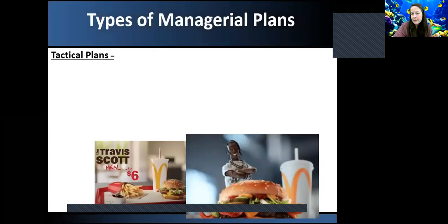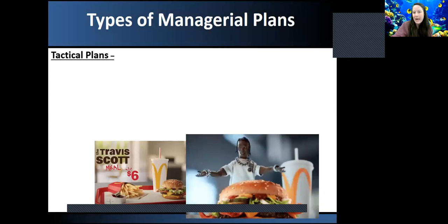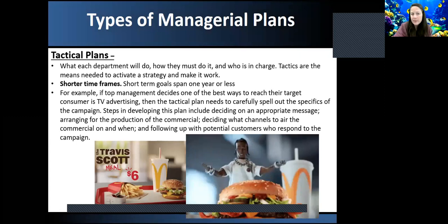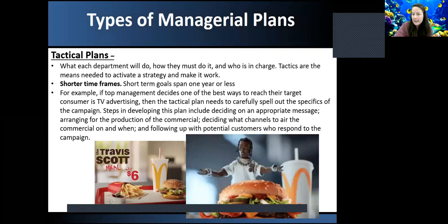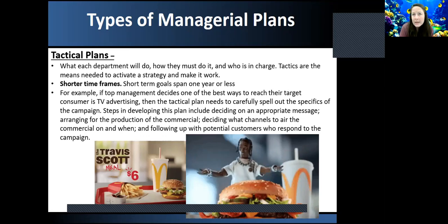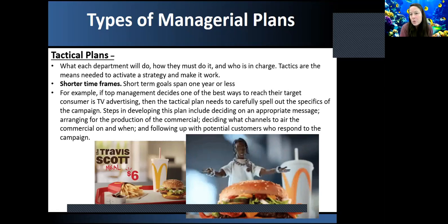Next is a tactical plan. This is the plan that actually puts the top level managers' vision into action. We're going to stick with McDonald's. With a tactical plan, they figure out who's going to do what, who's going to be in charge, how are we going to get this done. For this example, we're going to use the Travis Scott advertising campaign with McDonald's. If top management has decided they want to expand and reach their target audience using television advertising, then they'll decide how to advertise the message — what audience, what demographics, what stations, what channels, radio, and who their potential customers are.